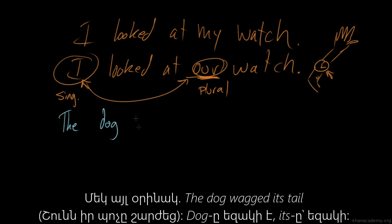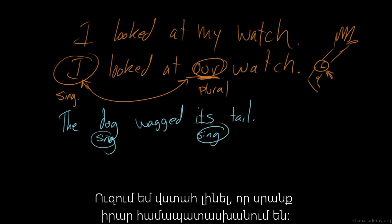So we've got the dog wagged its tail, right? Dog is singular. Its is singular. I want to make sure these things match up.